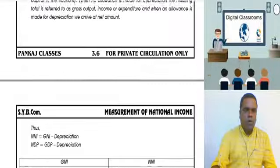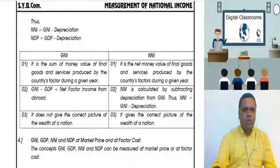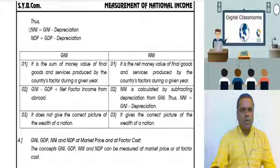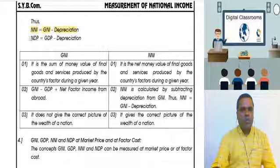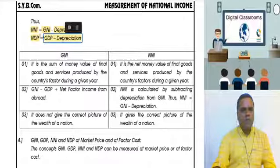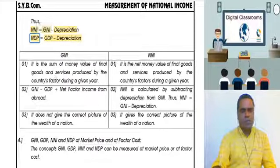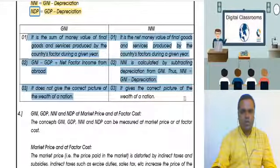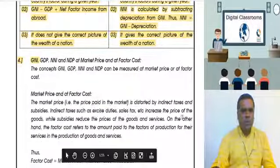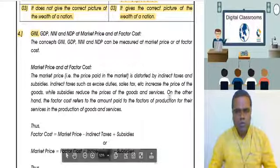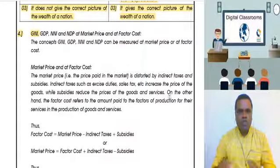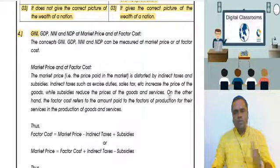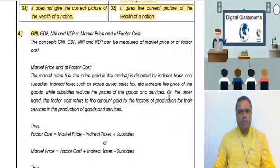Now, here is a comparative chart. Net national income equals gross national income minus depreciation. Net domestic product equals gross domestic product minus depreciation. These formulas are given with the values and prices — you can just refer to and read through them. If you have any doubts, get them cleared.